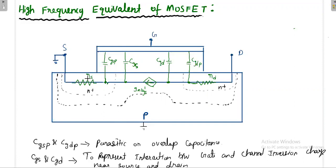At high frequency, there exists a small resistance in the source region RS, and similarly at the drain region RT. There is also a parasitic capacitance between the gate terminal and the source terminal called CGSP, and similarly a parasitic capacitance between the gate terminal and the drain terminal called CGDP.